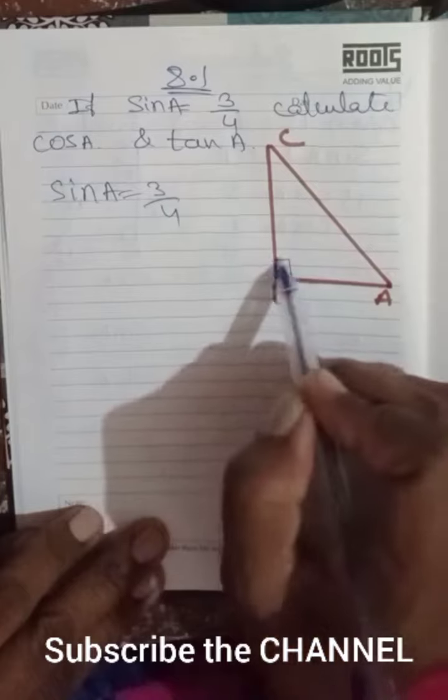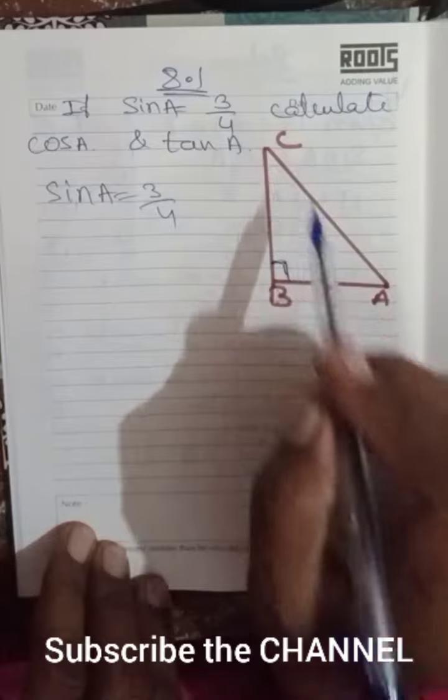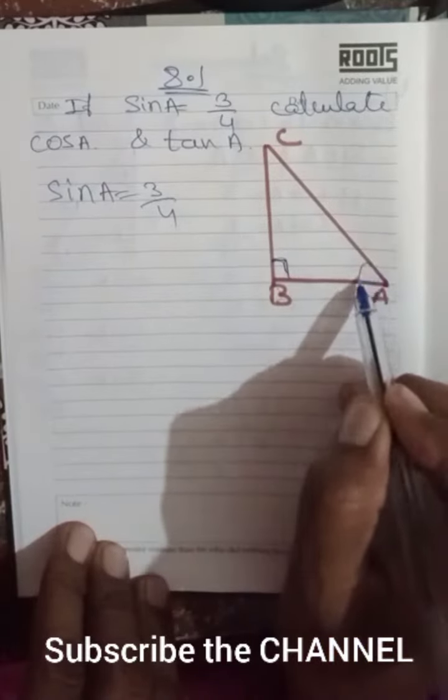You're going to name the vertices A, B, C. Very simple concept: this is our angle A. With respect to angle A, this becomes the opposite side, this is the hypotenuse, and...